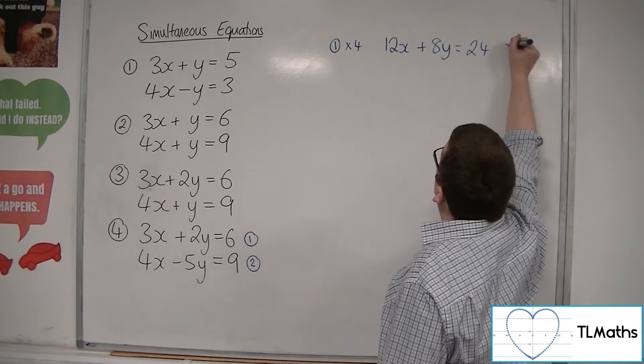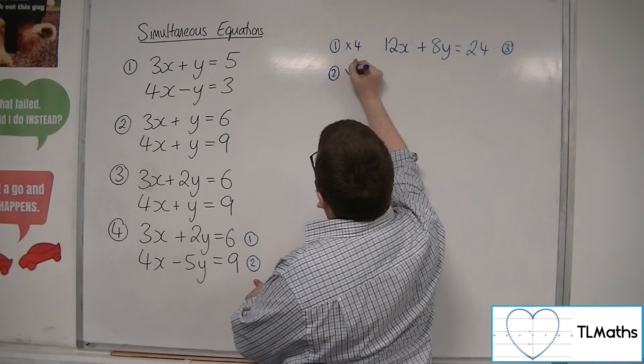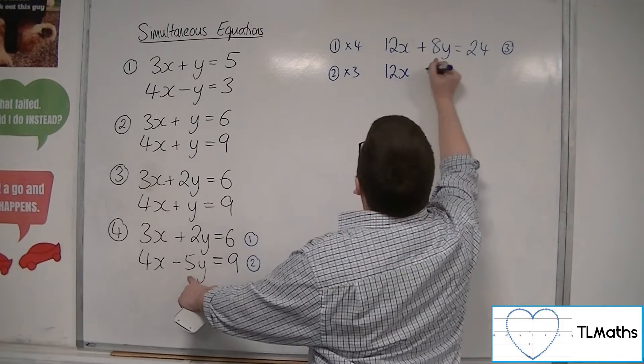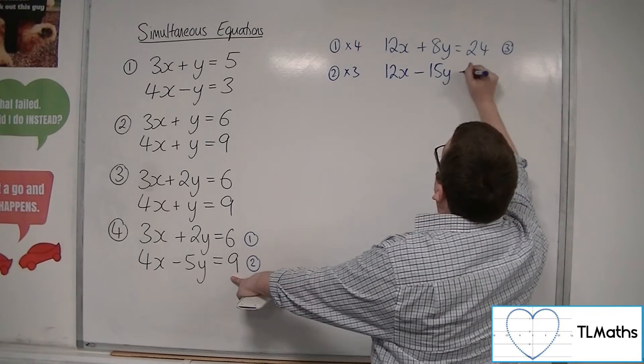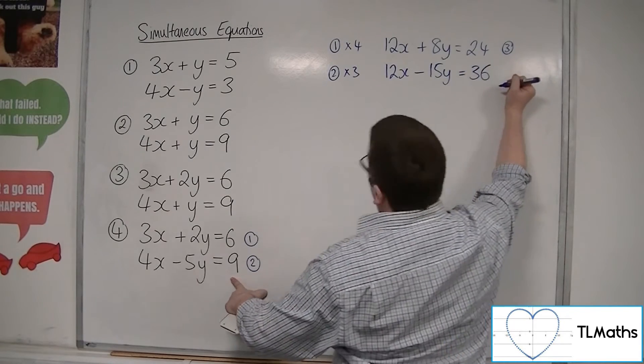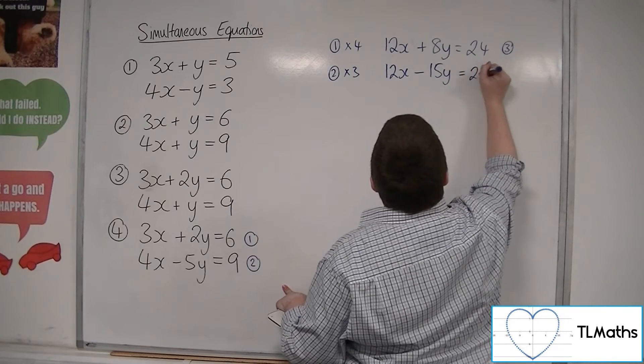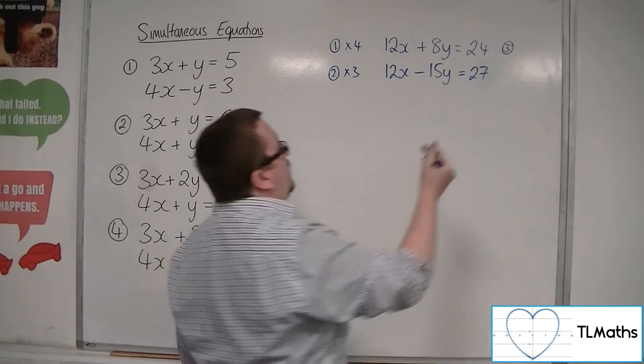And equation 2 multiplied by 3, so 12x minus 15y is equal to 27. Let's call that equation number 4.